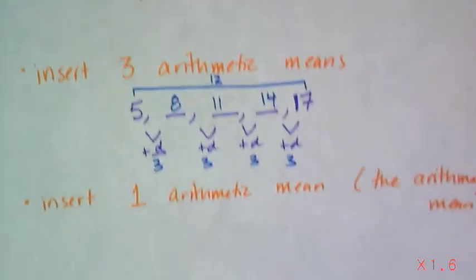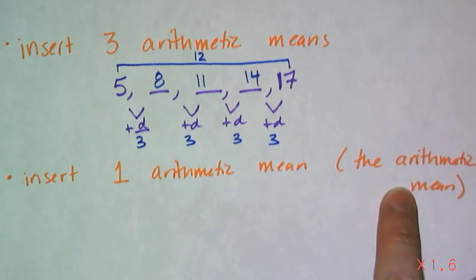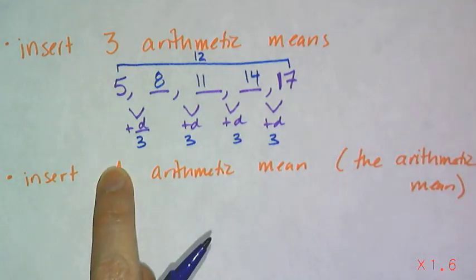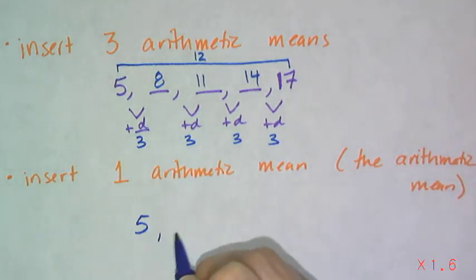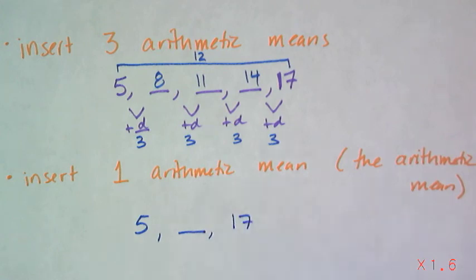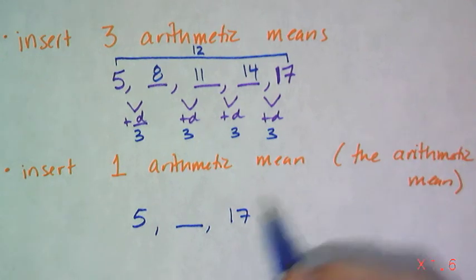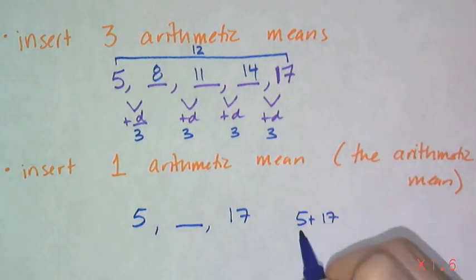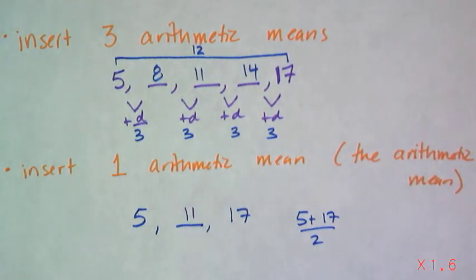Now, when I say I want the arithmetic mean, that means I want 1 arithmetic mean, which means I want to know what's in the middle of 5 and 17. And this is just old school average, where you add the two numbers, you divide by 2, and you get 11.